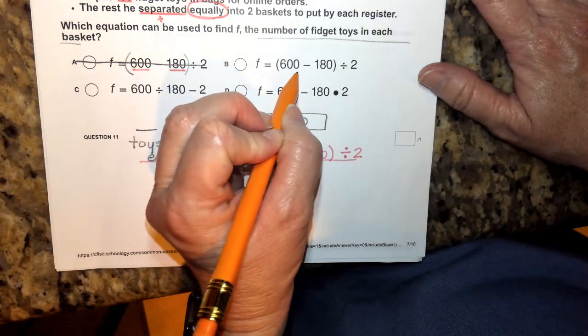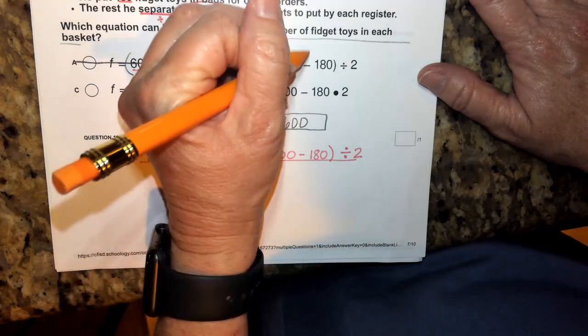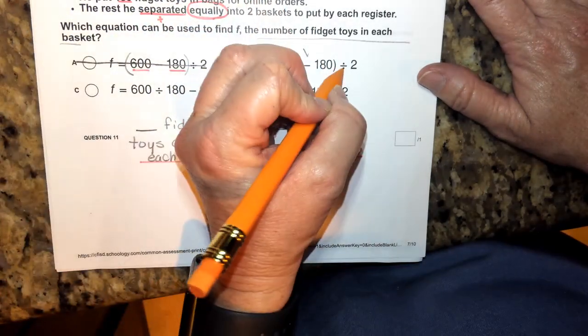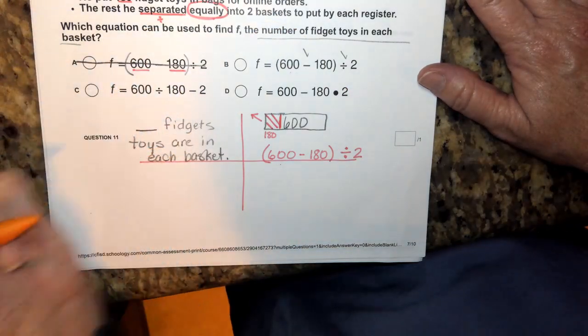When I look at B, 600 minus 180, that looks like what we decided. And we're going to divide that by two. That's what we decided. So B is actually looking like a great choice.